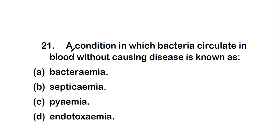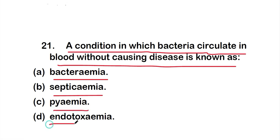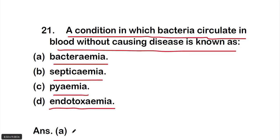The first question of this part two video: a condition in which bacteria circulate in blood without causing disease is known as — option A: bacteremia, option B: septicemia, option C: pyremia, or option D: endotoxemia. The right answer is option A, that is bacteremia.